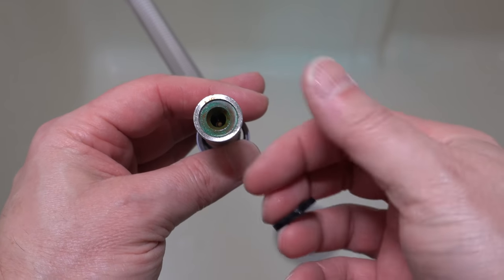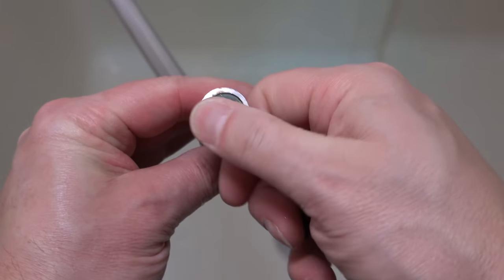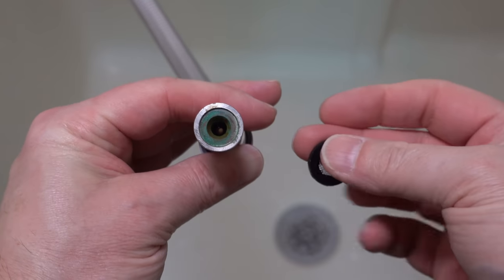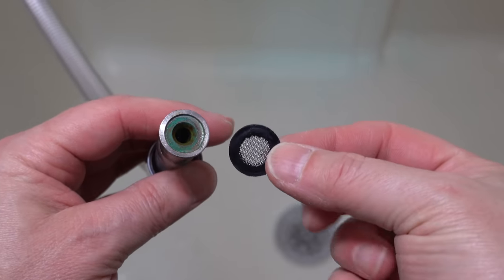You'll also want to take a look at the end of the hose. You're looking for any type of big cracks or huge chips and that's going to mean you're going to have to replace the hose or the entire shower head.